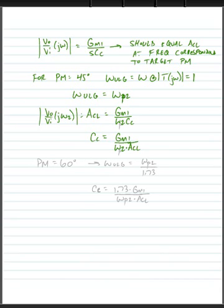We could show that if we wanted a phase margin of 60 degrees, we would only need to multiply by a factor. What would happen here is omega unity loop gain would equal omega P2 divided by 1.73. And if we substitute everything back in the same way we just did, we would find the compensation capacitance would equal 1.73 times GM1 divided by omega P2 times A closed loop.